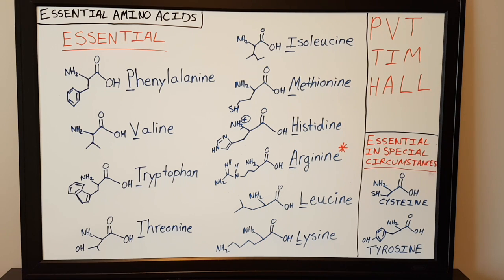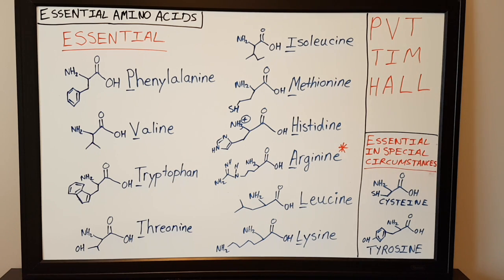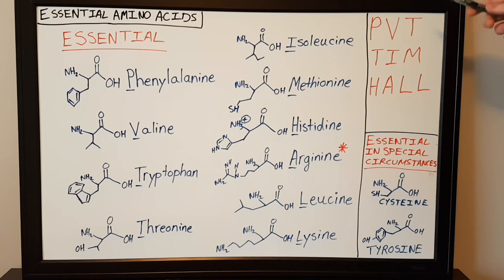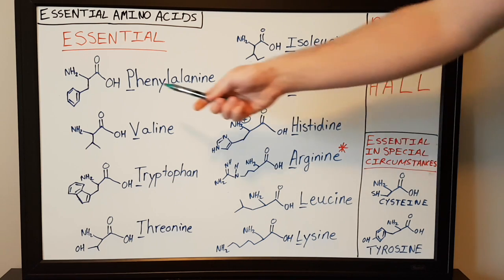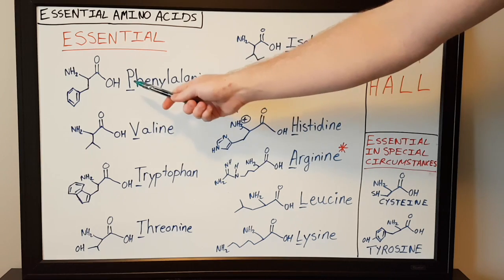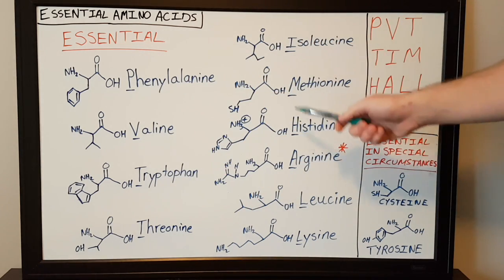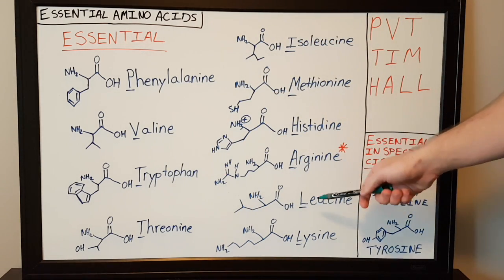To go over some details and a way to remember essential amino acids, there's a mnemonic device: 'PVT TIM HALL' — with the letters P, T, I, M, H, A, L, L representing the initials of each essential amino acid.